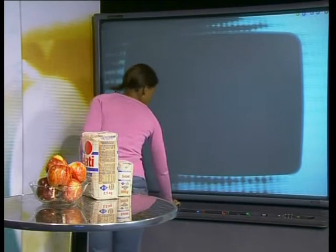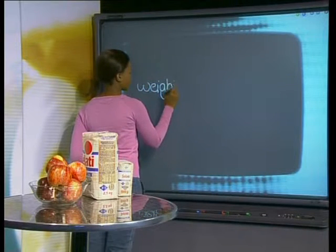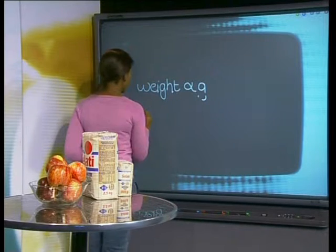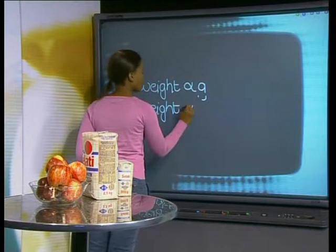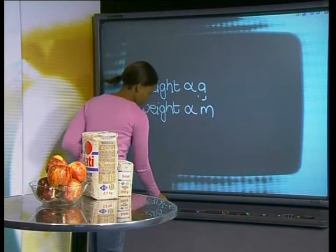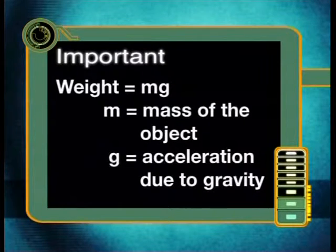So far we have found that weight and acceleration due to gravity are related. The greater the acceleration due to gravity, the greater the weight of an object. In fact, weight and acceleration due to gravity are directly proportional. We also know that weight and mass are related — these two are also directly proportional. In physics, we can represent this relationship in one equation: weight is equal to m, the mass of the object, multiplied by g, the magnitude of gravitational acceleration.